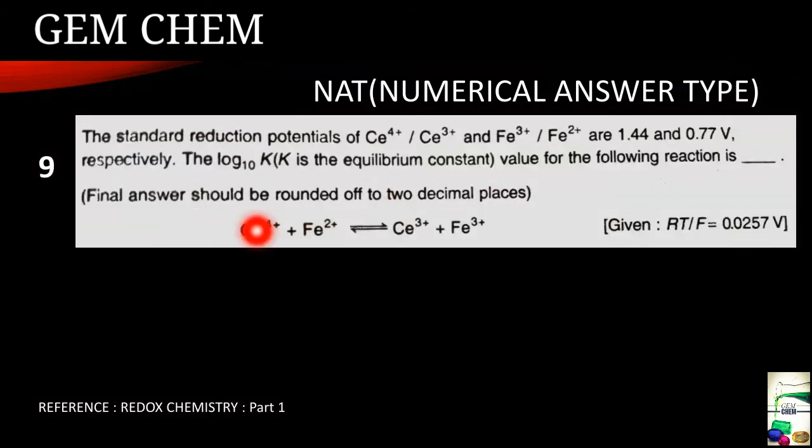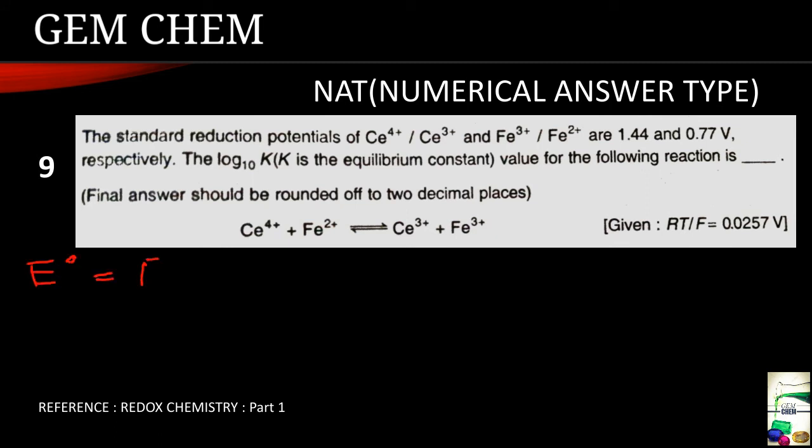Now we will see a question from the redox chemistry and for this reference you can use the redox chemistry part 1 video. This is a direct question. The standard reduction potential of cerium 4 plus, cerium 3 plus and iron 3 plus and iron 2 plus are given as 1.44 and 0.77 volts respectively. The log 10 K, that is equilibrium constant value for the following reaction is being asked for and the answer should be rounded off to 2 decimal places. RT by F is given as 0.0257V and the equation is also given.